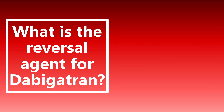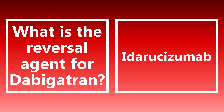What is the reversal agent for dabigatran? Remember, this is Pradaxa — a direct thrombin inhibitor. The reversal agent is Praxbind, but we need to know the actual generic name: idarucizumab. This is a monoclonal antibody and it's the reversal agent for dabigatran. Know this word so that if it appears on the boards or your ITE, you'll be able to get that right.